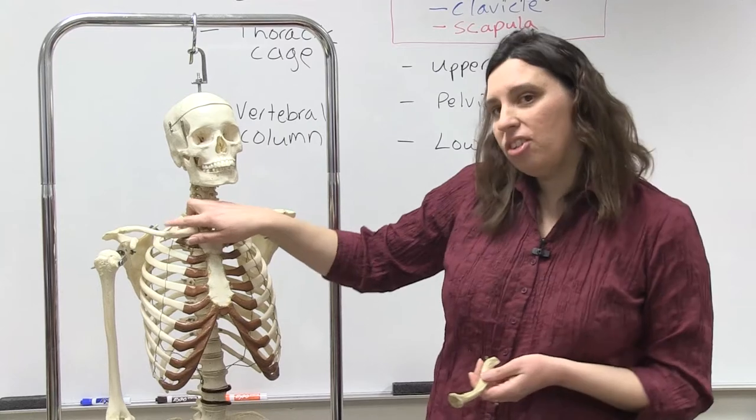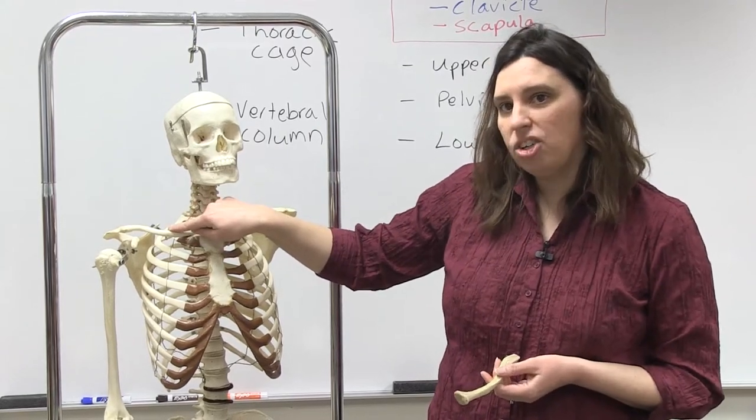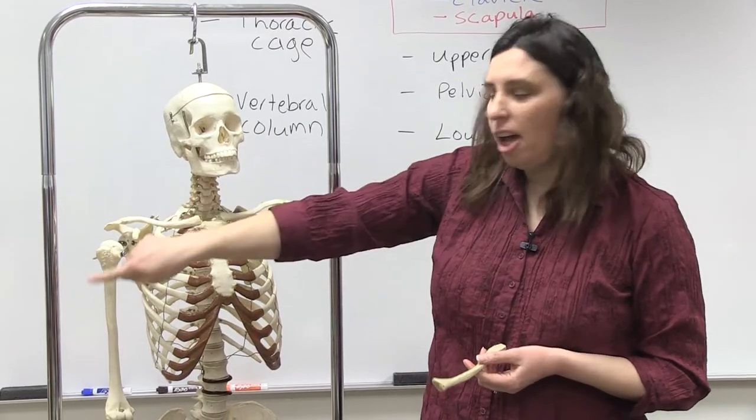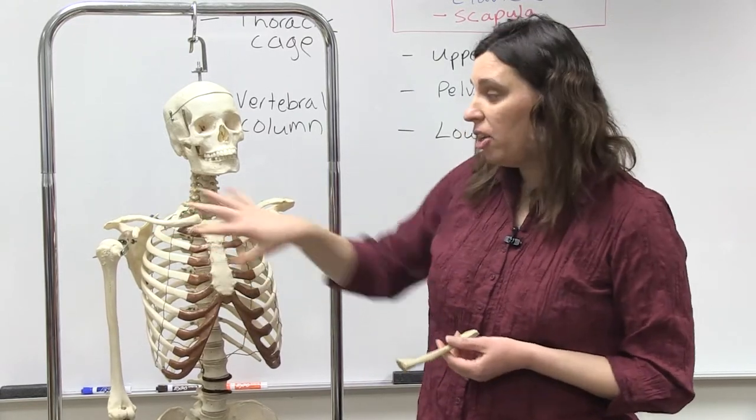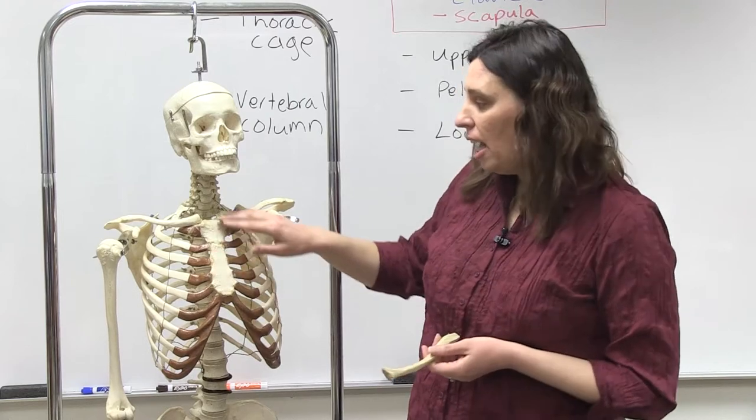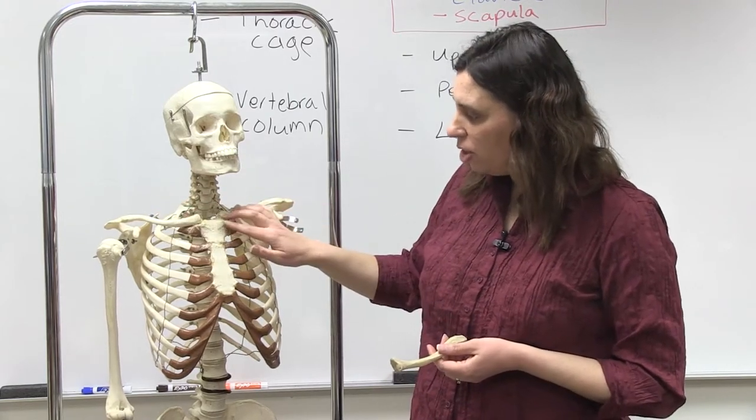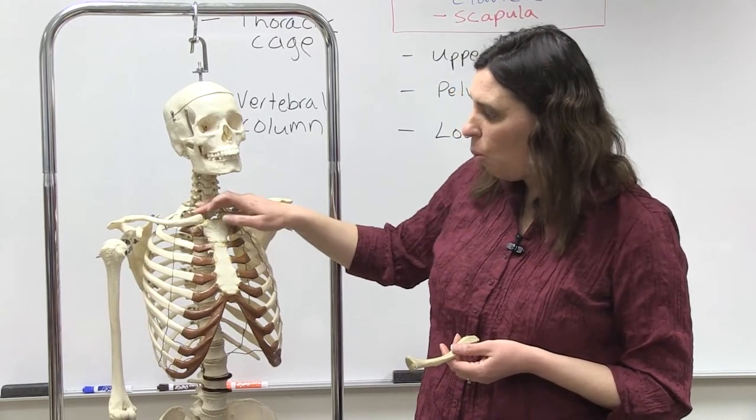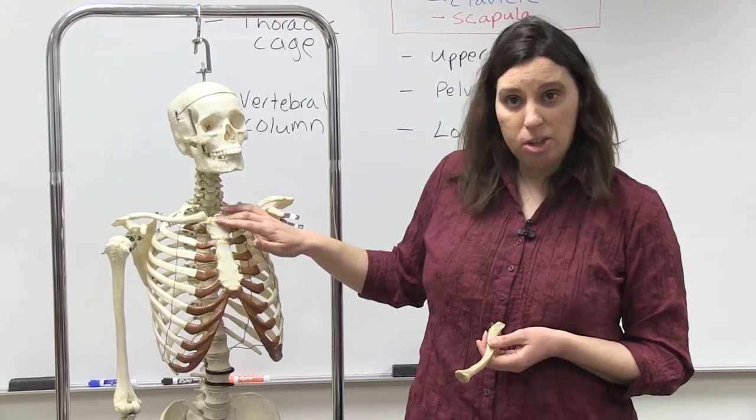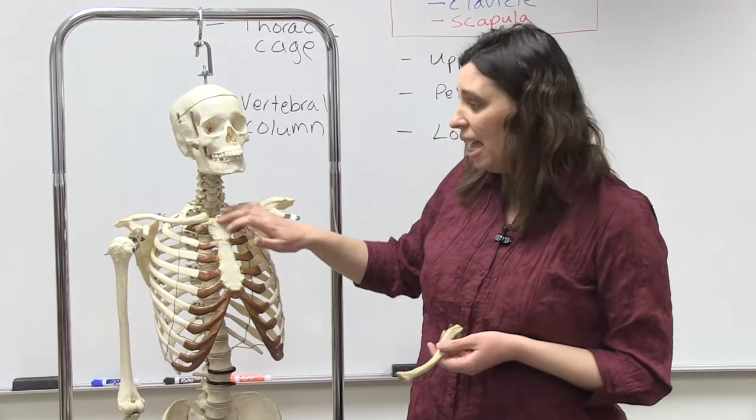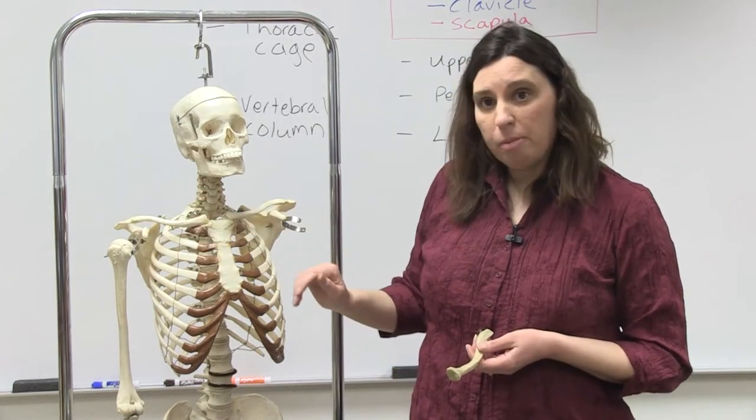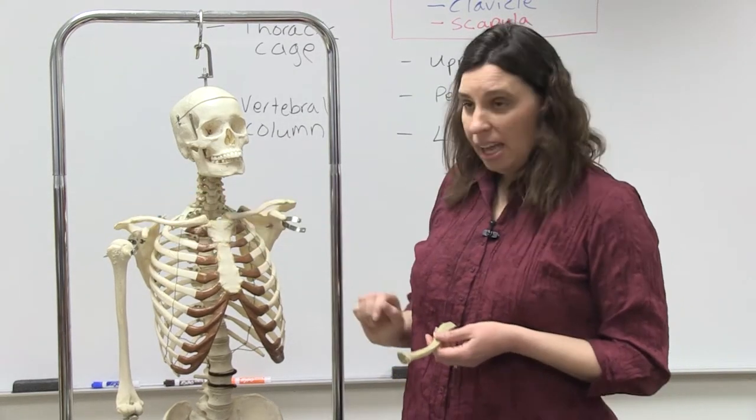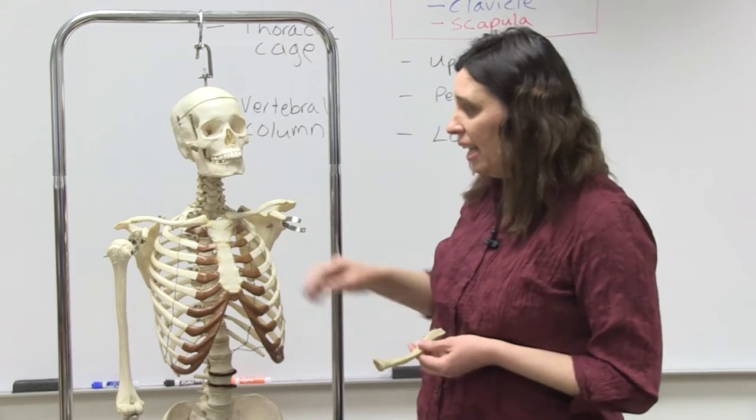Well, this is actually the only direct connection between the upper limb and the axial skeletal system. There is no other direct connection here. And so the clavicle actually has two major connections. It has one to the upper part of the sternum called the manubrium, and another to the scapula, which we'll talk about next, and specifically an area called the acromion.